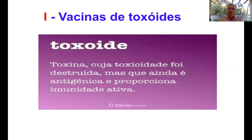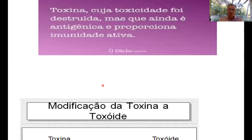Quando esse toxóide é inoculado no indivíduo, ele vai induzir a produção de anticorpos neutralizantes e, quando esse indivíduo entrar em contato, possivelmente, com essa bactéria patogênica, ele vai ter anticorpos contra essa toxina. Esses anticorpos são chamados de neutralizantes — eles se ligarão na toxina e, dessa maneira, vão conferir proteção a esse indivíduo vacinado.